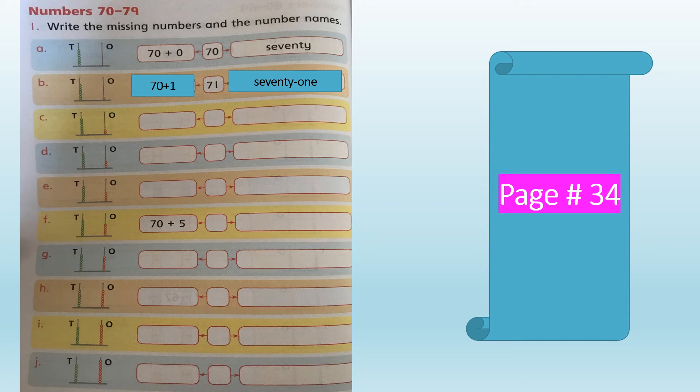After E, look at part F. In this part the abacus has 5 ones and 7 tens. So 7 tens plus 5 ones makes 75. The number name is S-E-V-E-N-T-Y, hyphen, F-I-V-E — seventy-five, 75. Do parts G and H in the same way.